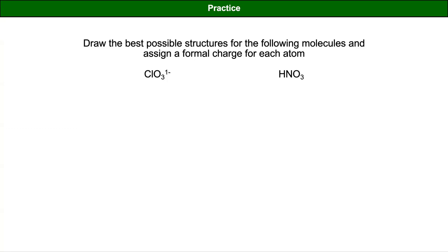It has eight electrons around it, but with formal charge these bonds only count for half, so the nitrogen is actually plus one — it owns four electrons but has five on the periodic table. What's the formal charge on this doubly-bonded oxygen? It has eight electrons around it, four of those are shared, so it owns six. On the periodic table it has six valence electrons, so its formal charge is zero.